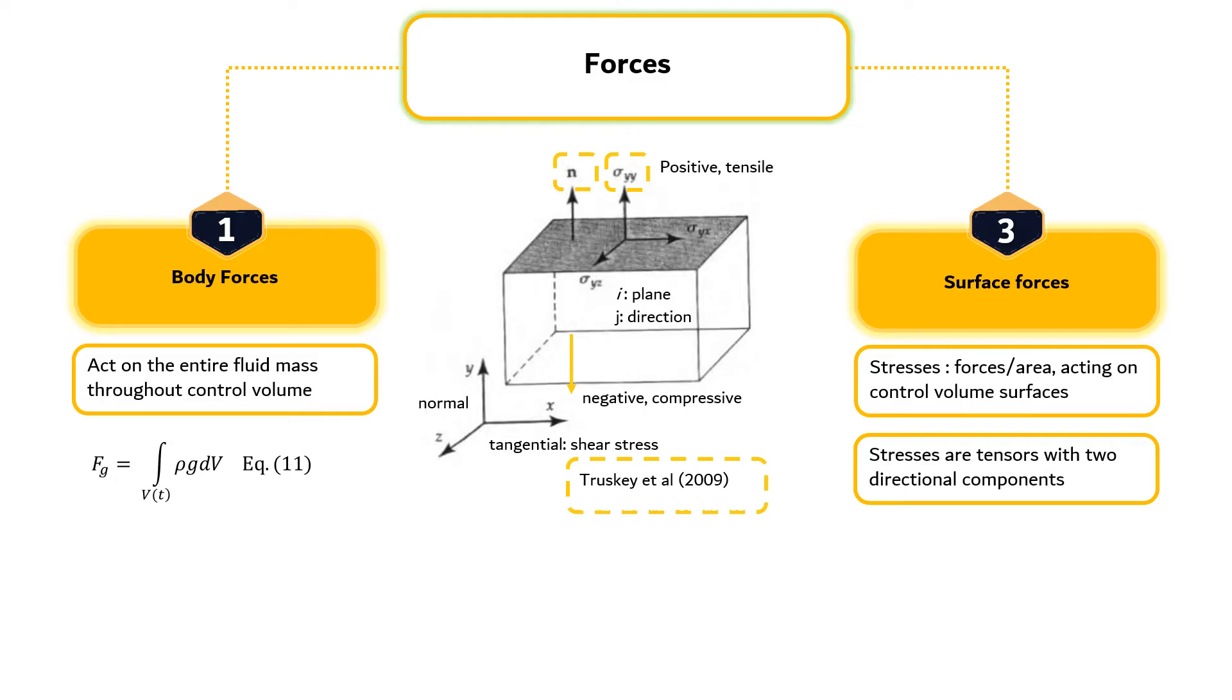The sign convention used in this book is that the stress is positive when it is exerted by the fluid in the direction which the unit outward normal vector points. Since n points outward in the positive y direction from the control volume surface, as shown in the figure, sigma yy is positive and tensile. The stress changes sign when the unit normal vector faces in the negative direction.